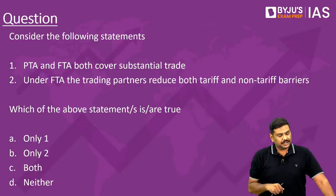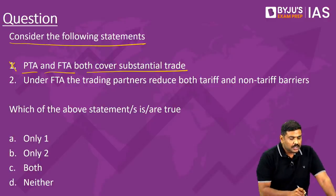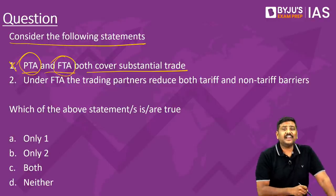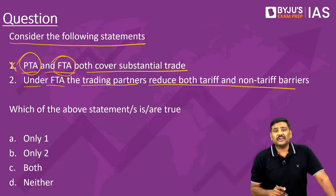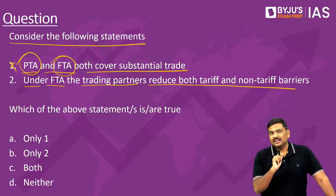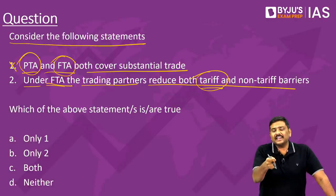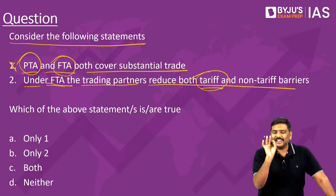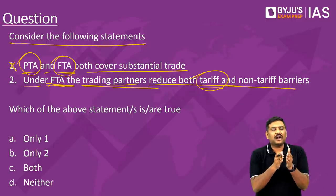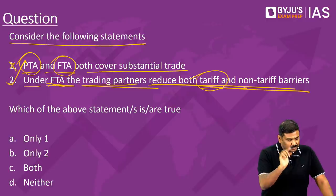Based on the discussion, consider the following statements: First, PTA and FTA both cover substantial trade — this is wrong, as PTA covers a very small part of trade whereas FTA covers a substantial amount. Second, under FTA the trading partners reduce both tariff as well as non-tariff barriers — this is true, as per government documents. The answer is option B, only statement 2.